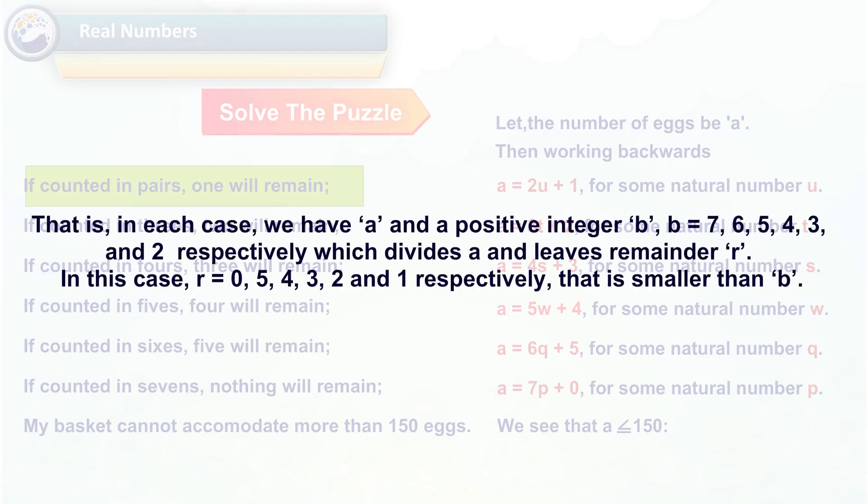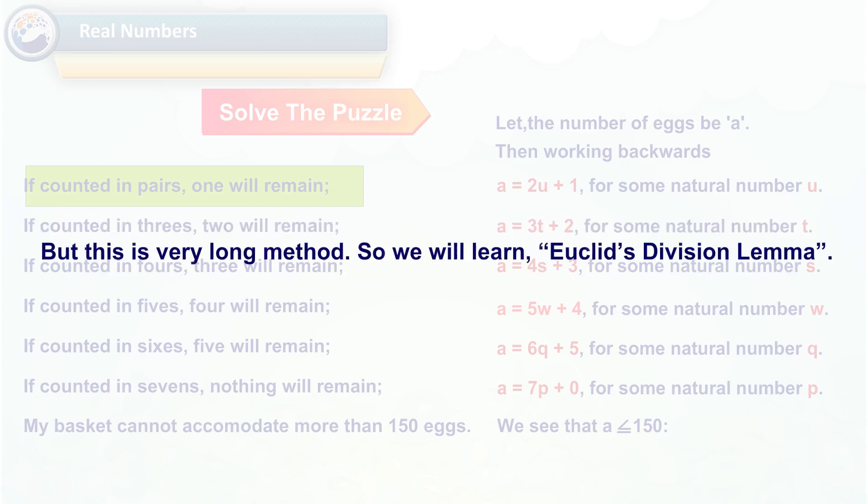That is, in each case, we have A and a positive integer B. B takes values 7, 6, 5, 4, 3, and 2 respectively, which divides A and leaves remainder R. In our case, R is 0, 5, 4, 3, 2, and 1 respectively, that is smaller than B. But this is a very long method, so we will learn Euclid's division lemma.